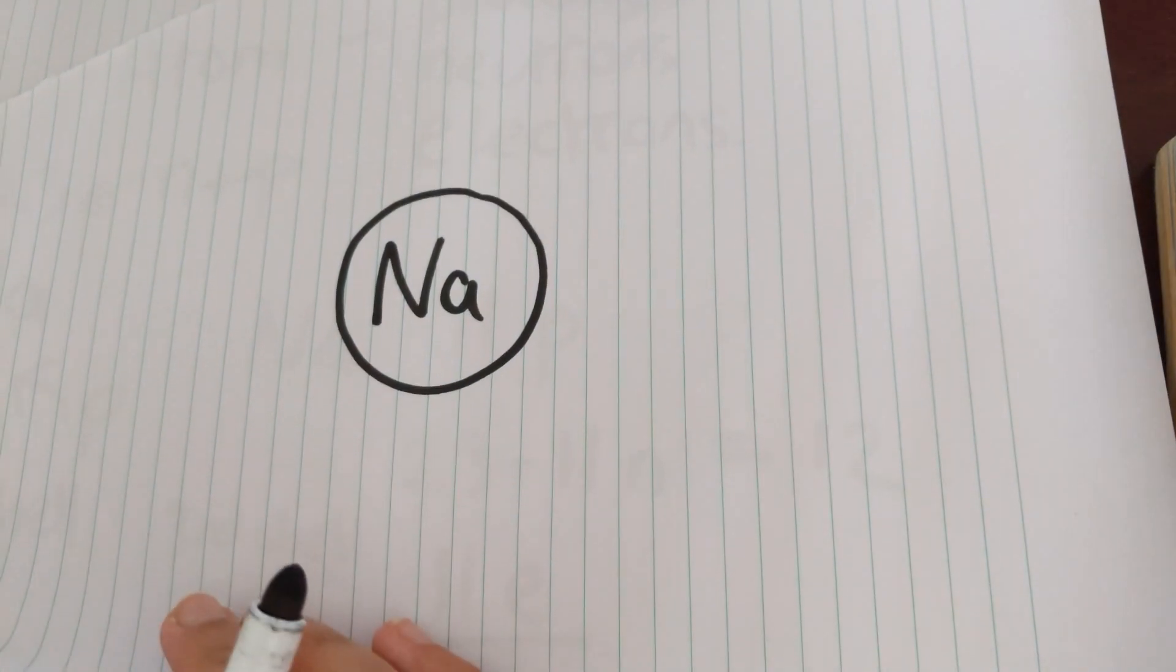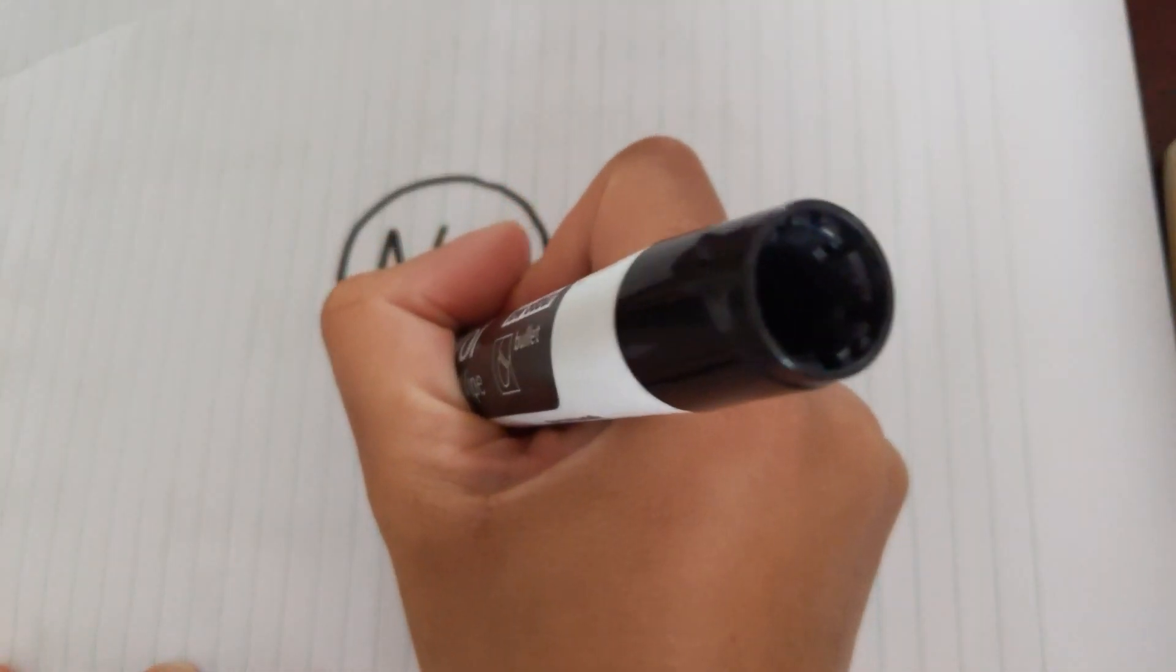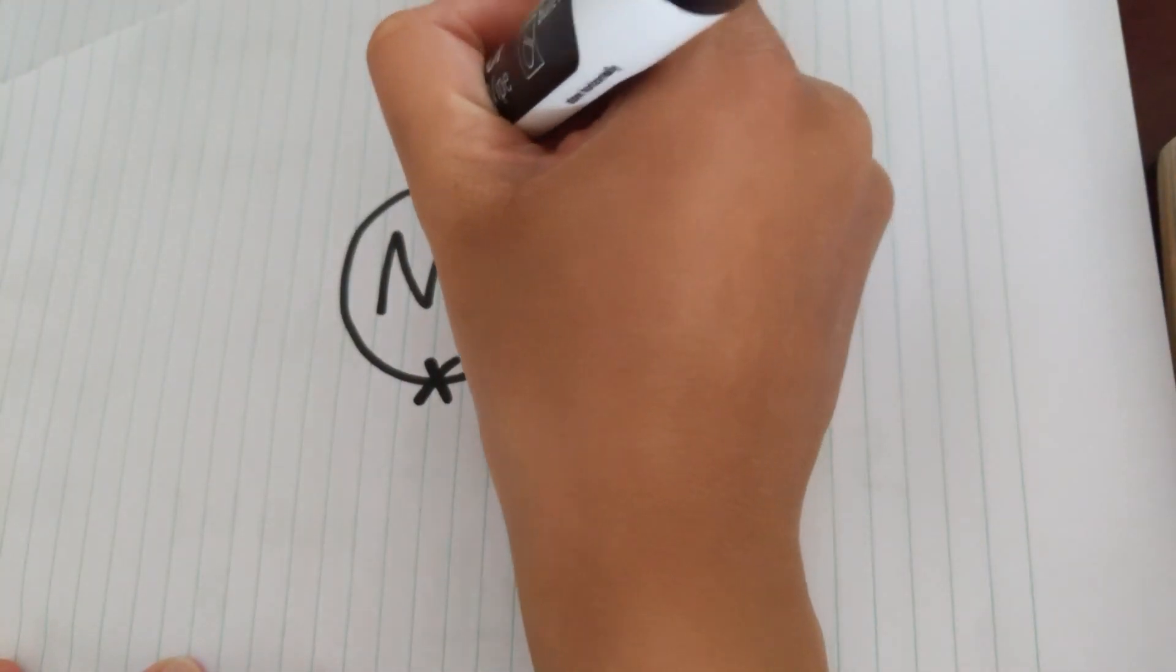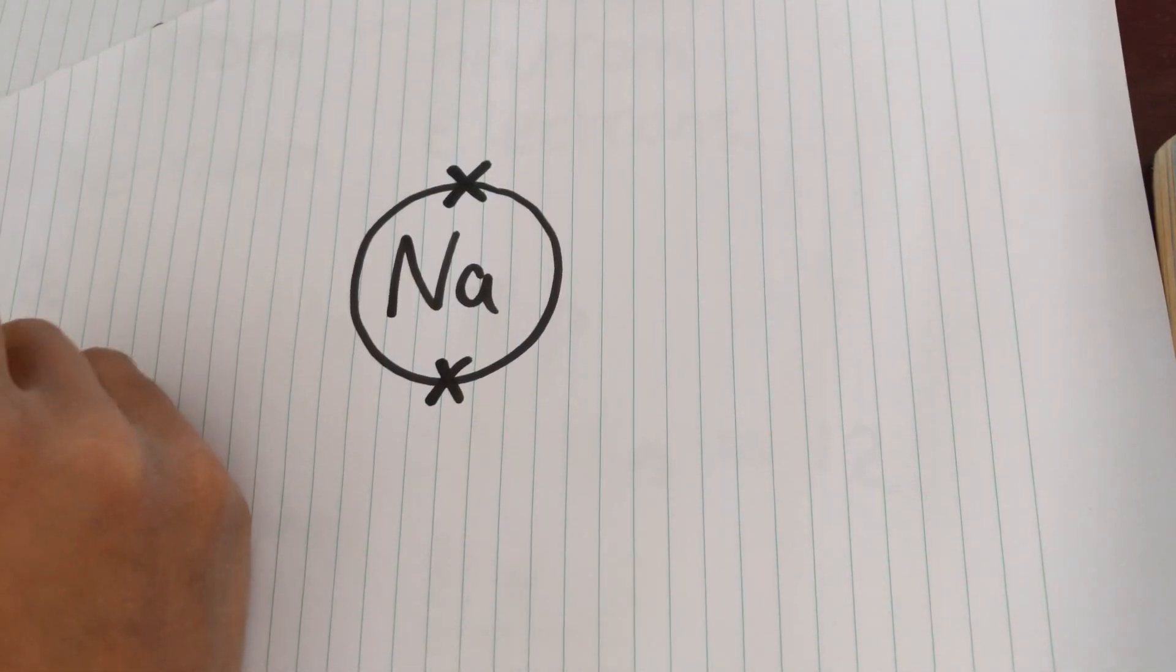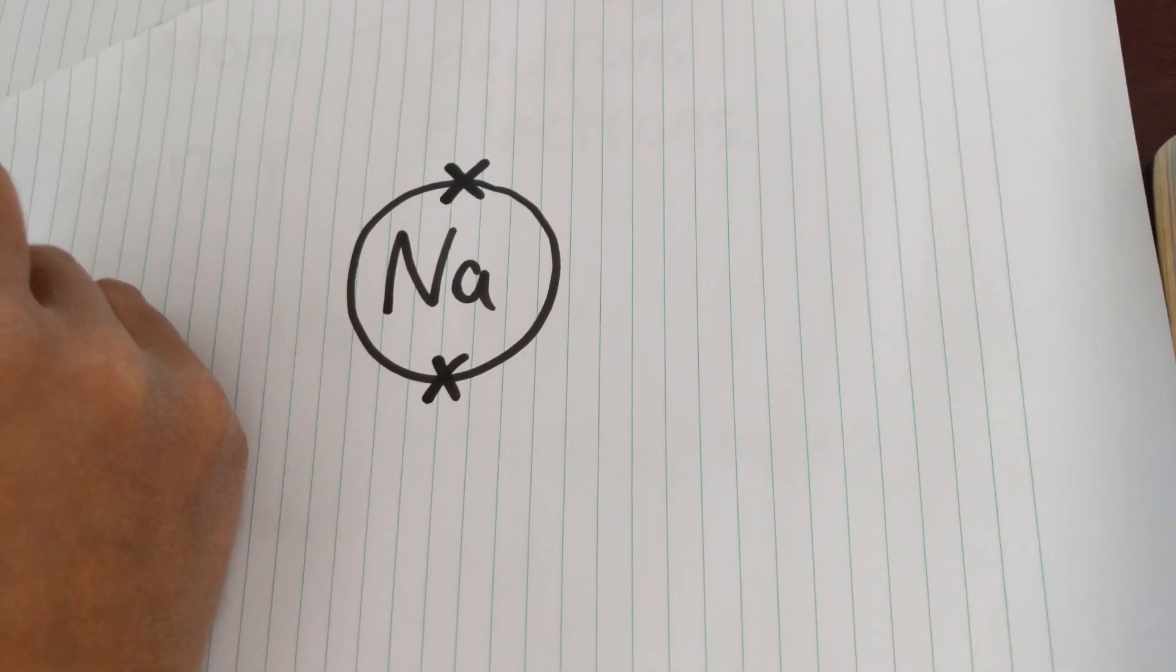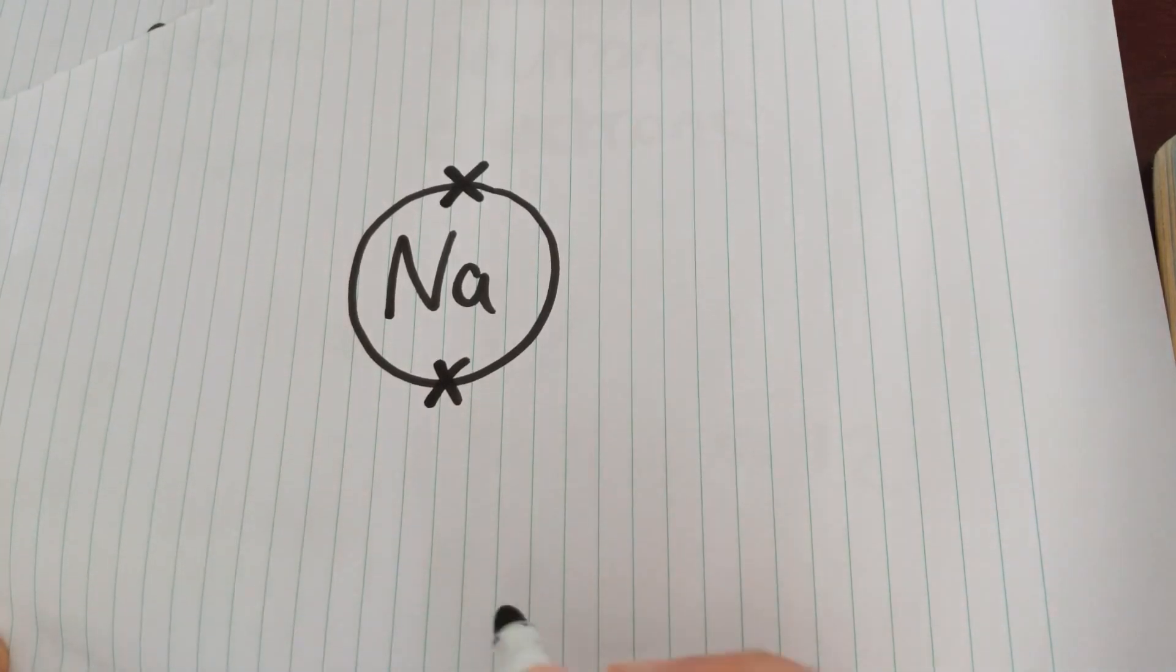The rule for the first shell is that it can have a maximum of two electrons. And we're going to represent them with a cross. So that's two taken out of the 11, which leaves us with nine.